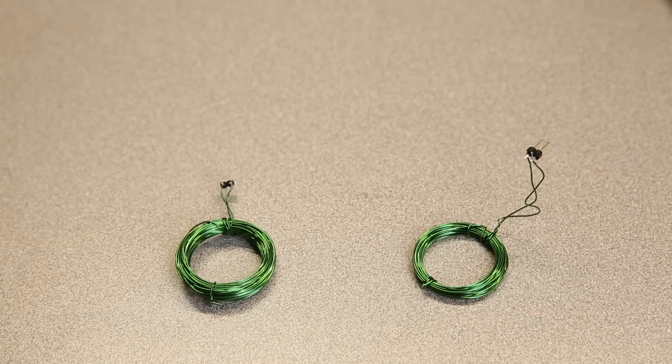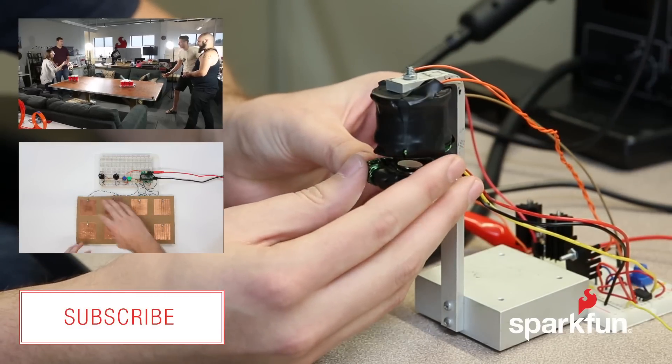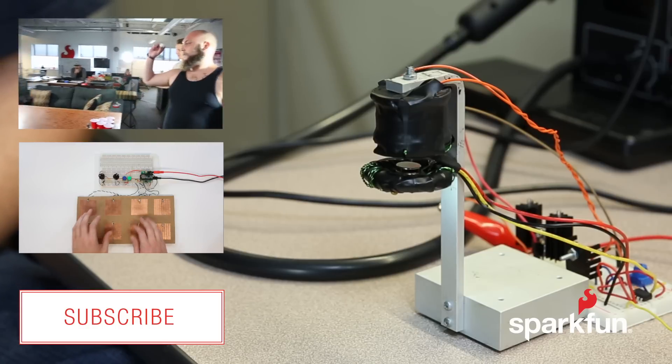I used a half bridge rectifier with a 0.1 microfarad filter capacitor to smooth out the ripple before powering the LED. It's not the most efficient way to power an LED, but it sure looks cool.